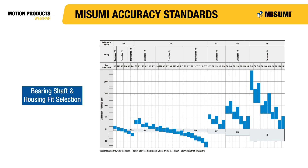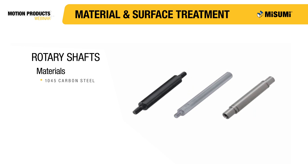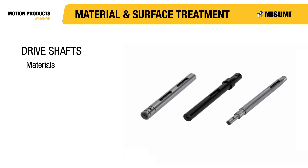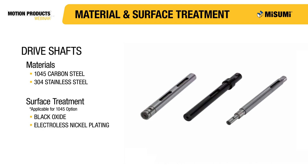Now that you've reviewed the tolerance and fit selection information, let's look at our shaft material options. Misumi rotary and drive shafts are offered in 1045 carbon steel and 304 stainless steel. For rotary shafts, the 1045 carbon steel must be selected with a black oxide or electroless nickel plating surface finish, while the 304 stainless steel option has no surface treatment available. Misumi drive shafts follow the same material options as rotary shafts.